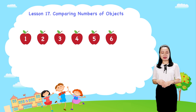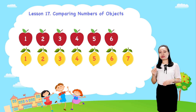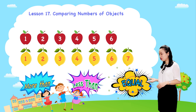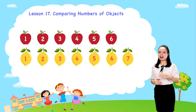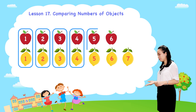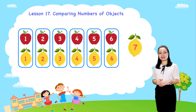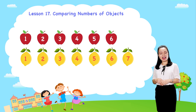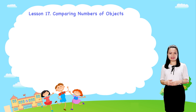Next, we have seven lemons. Is the number of apples more than, less than, or equal to the number of lemons? Let's pair an apple with a lemon. Then, one lemon is unpaired because there are fewer apples than lemons. So, the number of apples is less than the number of lemons.